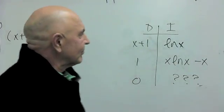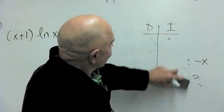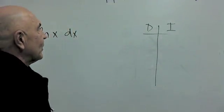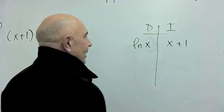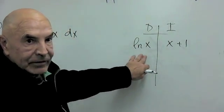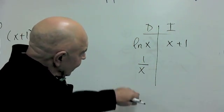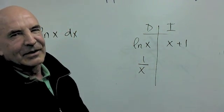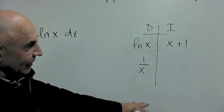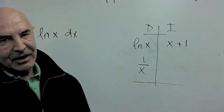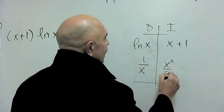Back to the drawing board — perhaps we should switch things around and do the counterintuitive thing: put natural log x in the D column, which forces us to put x plus 1 in the I column. When you differentiate natural log x, you get 1 over x. If we differentiate again, it gets worse: minus 1 over x squared, and then worse still. So let's stop while we're ahead. The antiderivative of x plus 1 is x squared over 2, plus x.